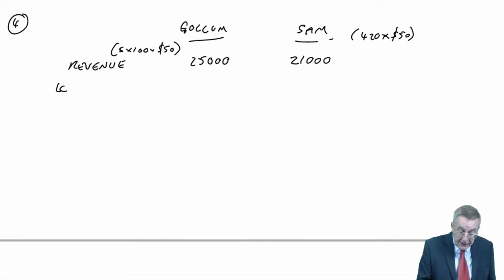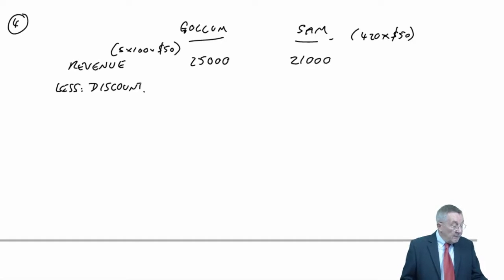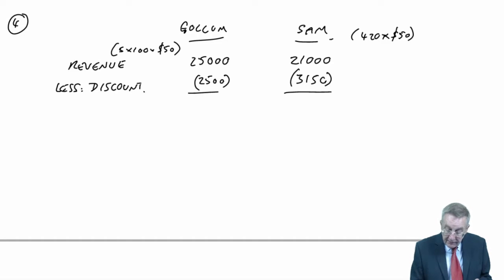Now we need to bring in any discounts to get the net revenue. Gollum gets a 10% discount for every order of 100 or more, they are ordering 100 each time, so 10% discount is 2,500. Whereas Sam gets a 15% discount, 3,150. And so we've got net revenue 22,500 for Gollum and for Sam, 17,850.